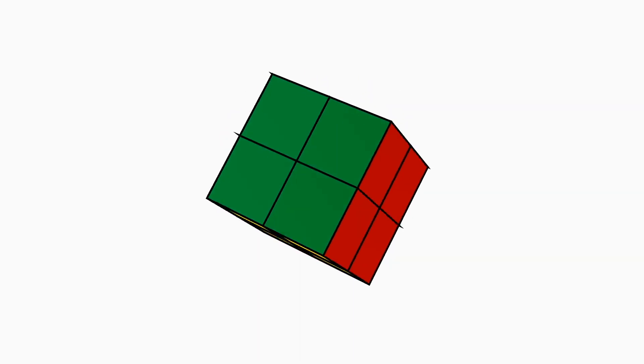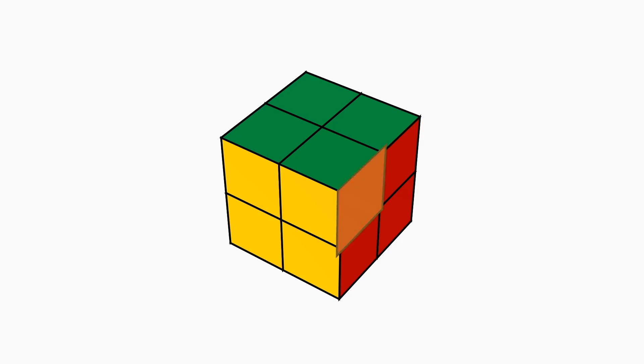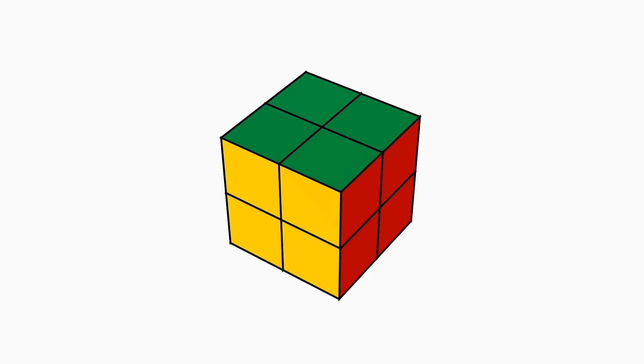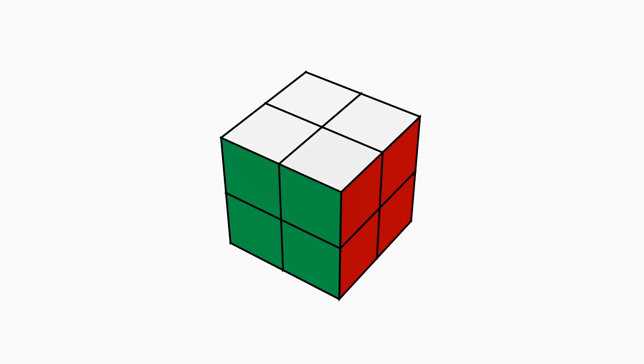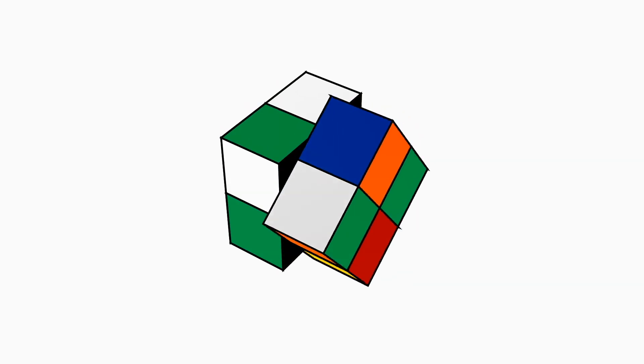The position that is being swapped with is where the yellow, red, and green piece is, from the red sticker. If we perform this algorithm, known as the Y-perm, the white and red stickers will swap places.